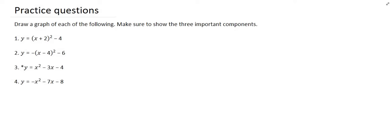In the last video lesson we discussed how to draw a parabola. We will now look at four examples and show how exactly we draw a parabola, showing the three different components that you need to successfully draw the parabola. Remember that the three things needed are x-intercepts, y-intercepts, and turning point. It does not matter in which order you find the three points.